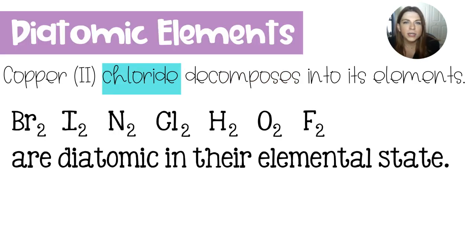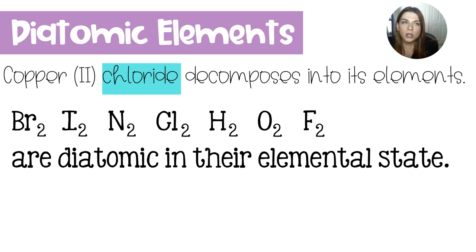Another thing to be mindful of when it comes to these word equations are the diatomic elements. I find that a lot of students mess this up, and that's okay because you're learning. But we have copper 2 chloride, meaning that chlorine on its own is a diatomic element. These are the other diatomic elements. So anytime they're not bonded, they're going to take on this form.